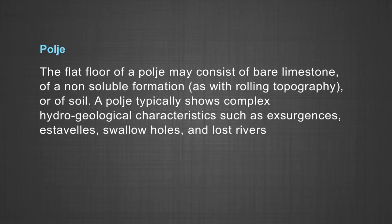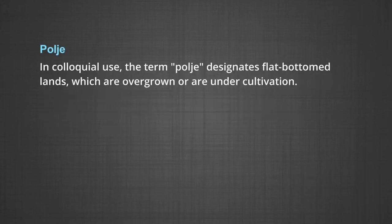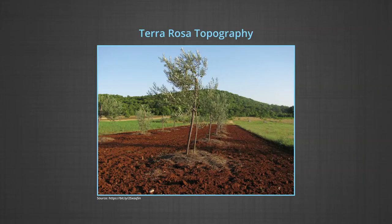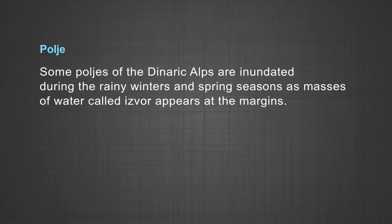A polje or karst polje covers the flat bottom of some closed basins which may extend over large areas up to 1000 square kilometers. The flat floor of a polje may consist of bare limestone, a non-soluble formation, or of soil. A polje typically shows complex hydrogeological characteristics such as exurgencies, estavelles, swallow holes, and lost rivers. In colloquial use, the term polje designates flat bottomlands which are overgrown or are under cultivation. The generic karst has many poljes, mostly distributed in subtropical and tropical latitudes, but some also appear in temperate or rarely boreal regions. Usually covered with thick sediments called terra rossa, they are used extensively for agricultural purposes. Some poljes of the generic Alps are inundated during rainy winters and spring seasons as masses of water appear at the margins, and the water disappears through shafts called ponore.